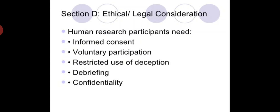You have to keep in mind the validity and reliability of your research at every point — even when selecting a data collection tool, your sample, and your data analysis method. You have to explain validity and reliability very well in your dissertation, thesis, or research proposal. Section D covers ethical and legal considerations in research, which we have already discussed.